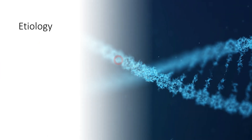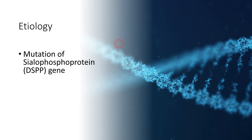Since dentinogenesis imperfecta is a hereditary disorder, there is a mutation of a gene. The most commonly mutated gene found in almost all cases of dentinogenesis imperfecta is the silophosphoprotein gene — the DSPP gene.